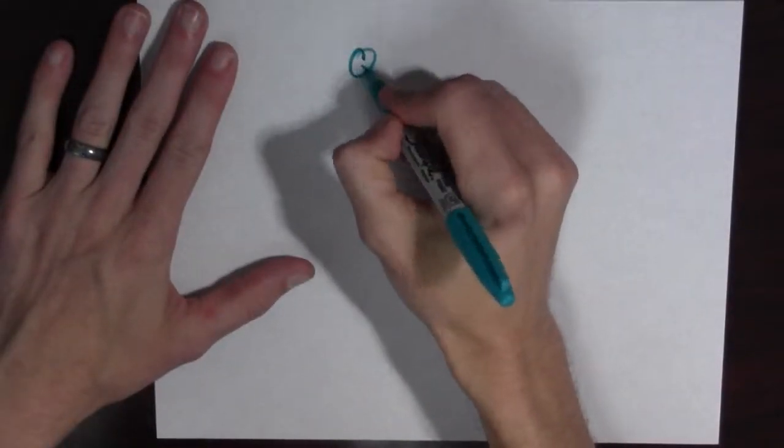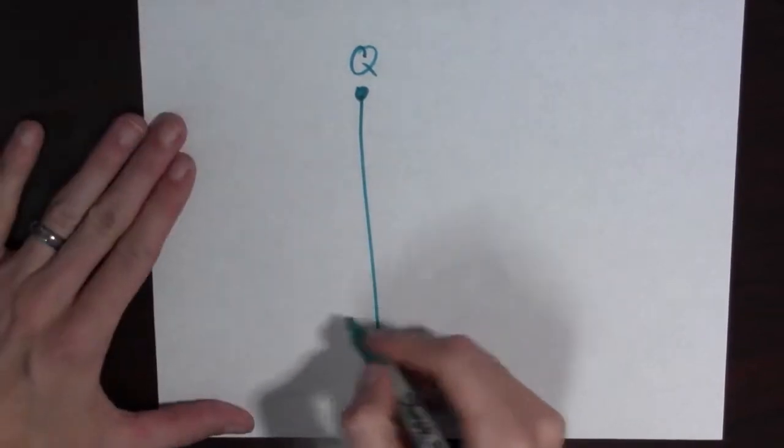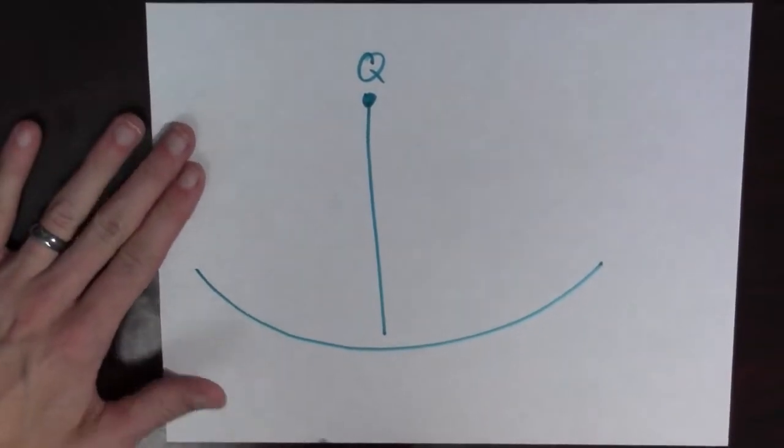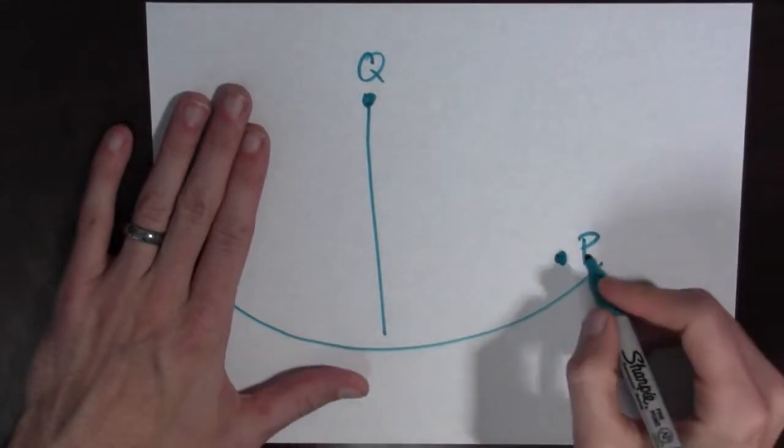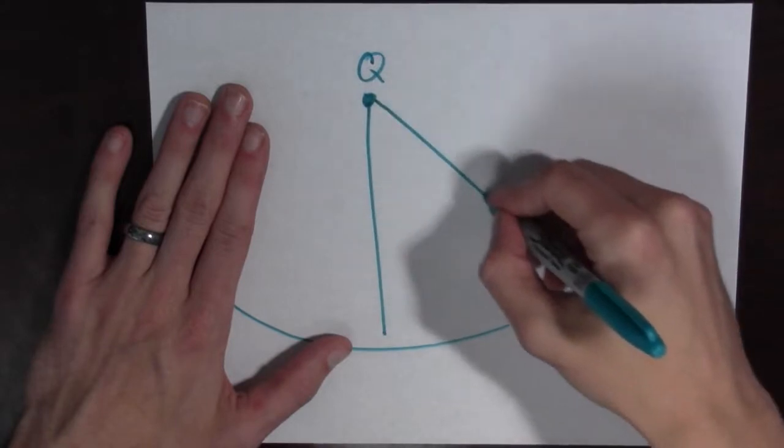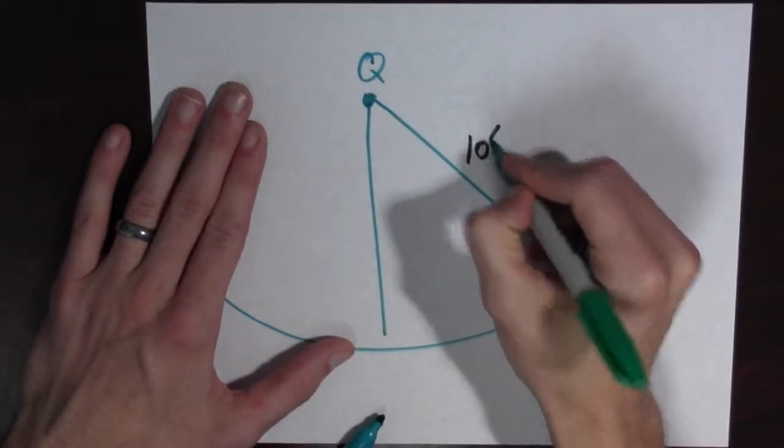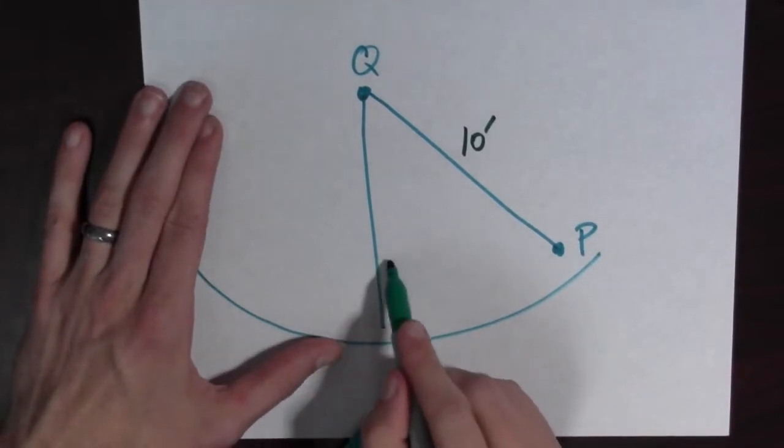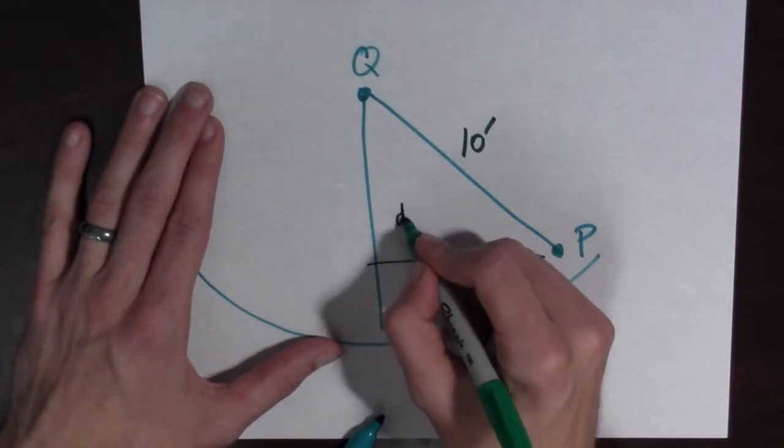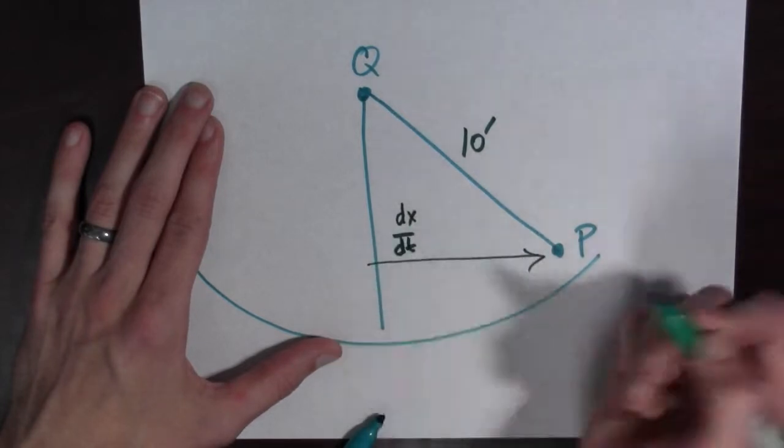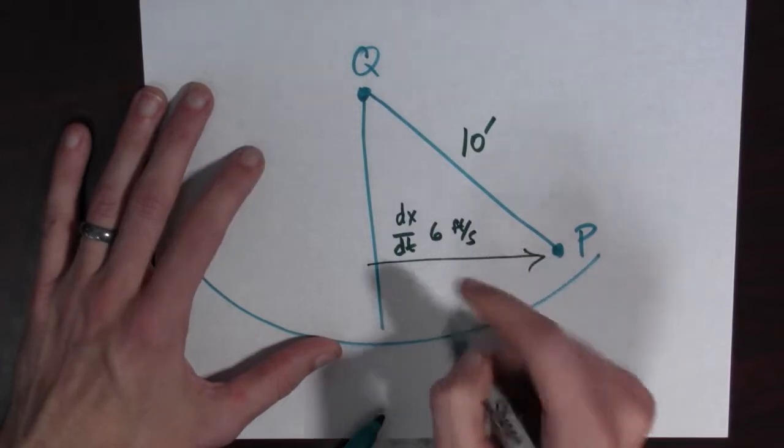Well we're going to have a point Q and that's where the swing is attached. The swing is swinging out something like this and then we have a point P and that's where the person is. We have the string holding onto the person and this is ten feet and then somebody else is pushing the person.